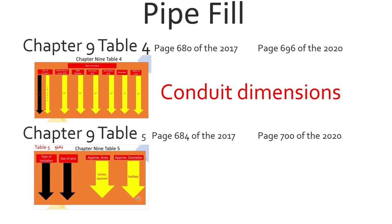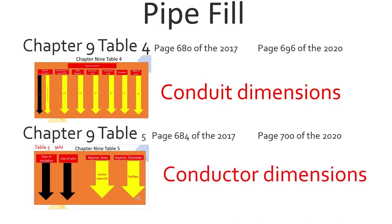Now that we've learned about Chapter 9 Table 4 — which covers conduit dimensions — let's head to Chapter 9 Table 5 to learn about conductor dimensions. Just like with box fill, each conductor has a size, but in pipe fill that size is measured in square inches. We need to find that square inch value, and then all we have to do is divide, just like we did in box fill.